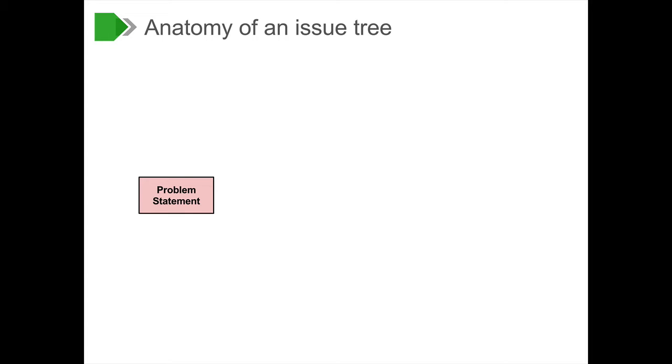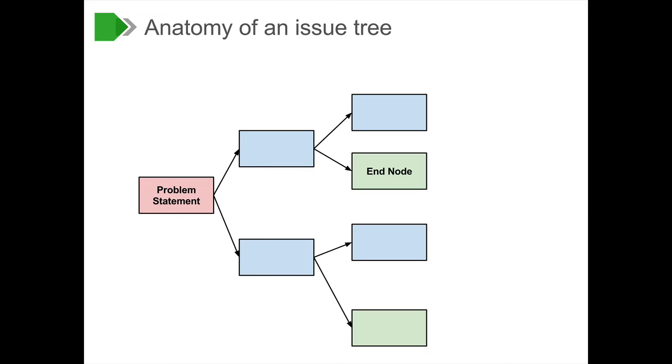Always start with a problem statement. From here, each step is dependent on a small number of component steps, which are in turn dependent on further components. When a component in your tree can no longer be broken up into pieces, but involves a single concept or a single variable, then you have an end or a leaf node.